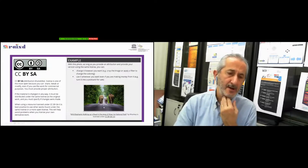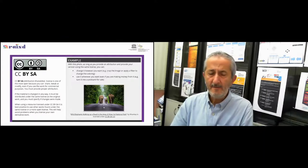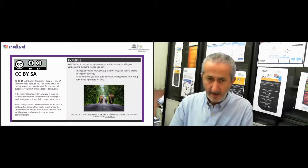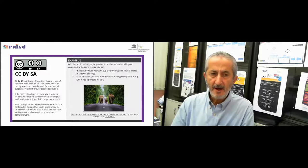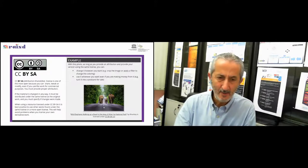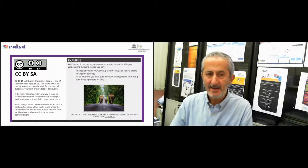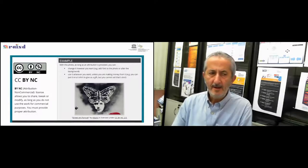With a CC BY SA image, I can crop it, apply filters, change colors, do whatever I want — even make money from it. But if I change anything and want to publish the new work, I must use the same CC BY SA license on the new work. I cannot, for example, add a non-commercial restriction to something derived from a CC BY SA original.